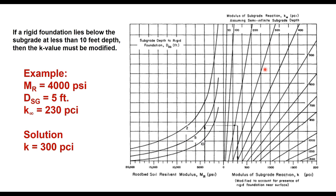These are the lines for k_infinite values, so k_infinite value is 230. Let us say this is the point here, and from this point you move vertically down to read the modulus of subgrade reaction on this axis. The value is 300 pci. That is how it is used.